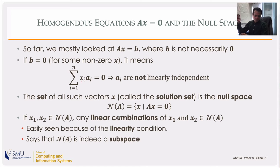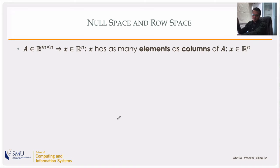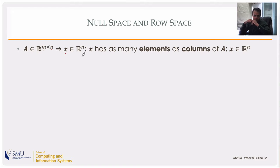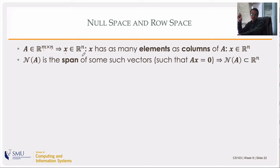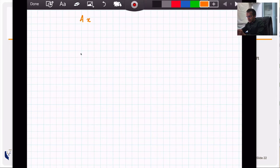The null space is a solution set, not a linear combination of anything — each vector x in it belongs to ℝⁿ, since x has as many components as the columns of A (n columns). So the null space is a subset of ℝⁿ. Now, thinking of Ax = 0 with A written as rows r₁, r₂, ..., rₘ, the equation row-by-row gives rᵢᵀx = 0 for each i. This means x is orthogonal to every single row of A.